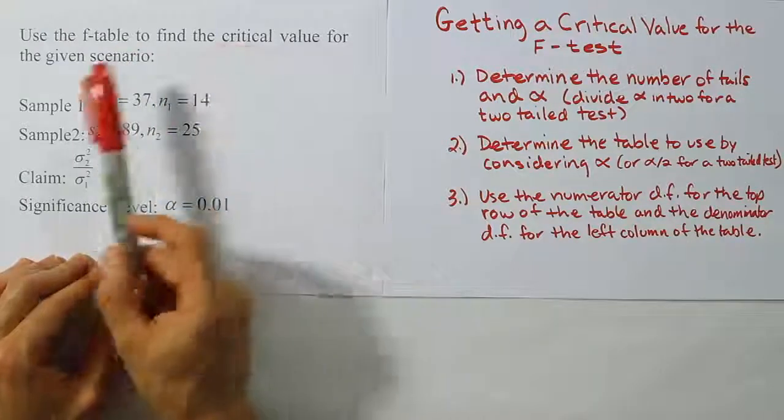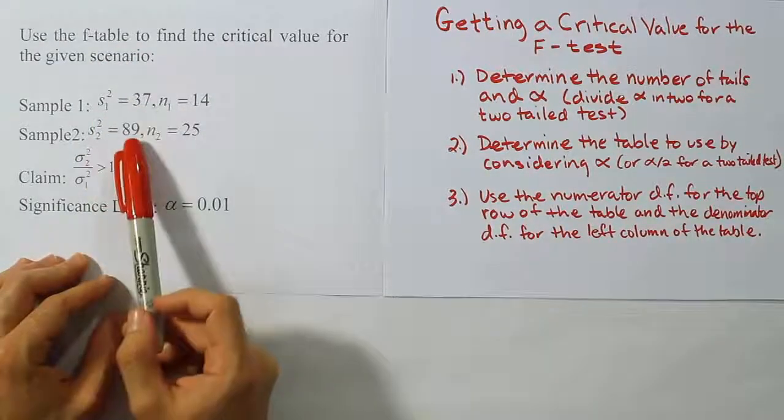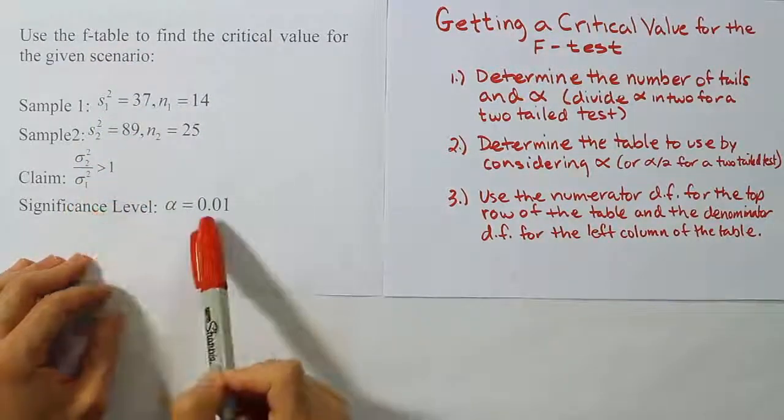Use the F-table to find the critical value for the given scenario. So we have some sample data, we have a claim, and we have a significance level.